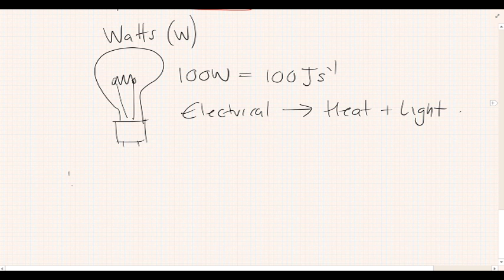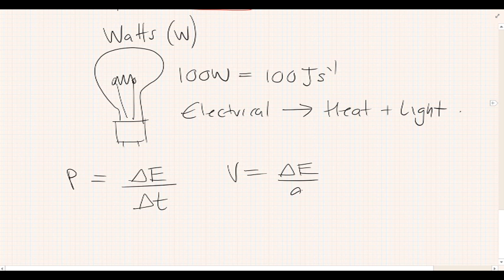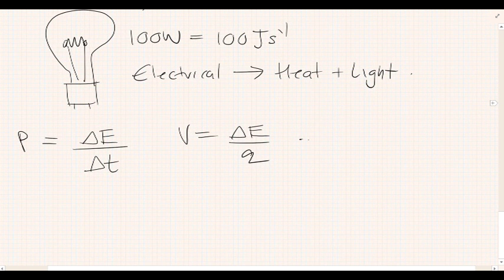If we go one step further, we know that power is the rate at which energy is transformed, transferred, and we also know that voltage is the amount of energy per charge. With a little bit of rearranging, you can see this means that the energy, changing energy, is equal to V times Q.